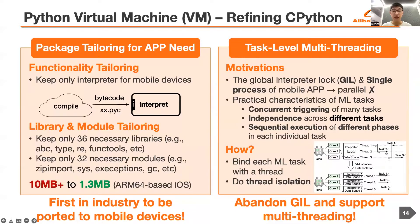Regarding the Python virtual machine, its base is CPython. However, there exist two key problems. The first is that the package size is large, with much redundancy for mobile apps. The second is that the GIL in CPython limits the task-level parallel execution capability in the single-process mobile app. To reduce the package size, we perform functionality tailoring: by leaving the script compile phase on the cloud and sending only the bytecode to mobile devices for execution, we can delete all compile-related modules, and also do library and module tailoring. To support task-level multi-threading, we abandon GIL, bind each machine learning task with a thread, and conduct thread isolation. The key to thread safety is to perform thread-level virtual machine isolation and data isolation.